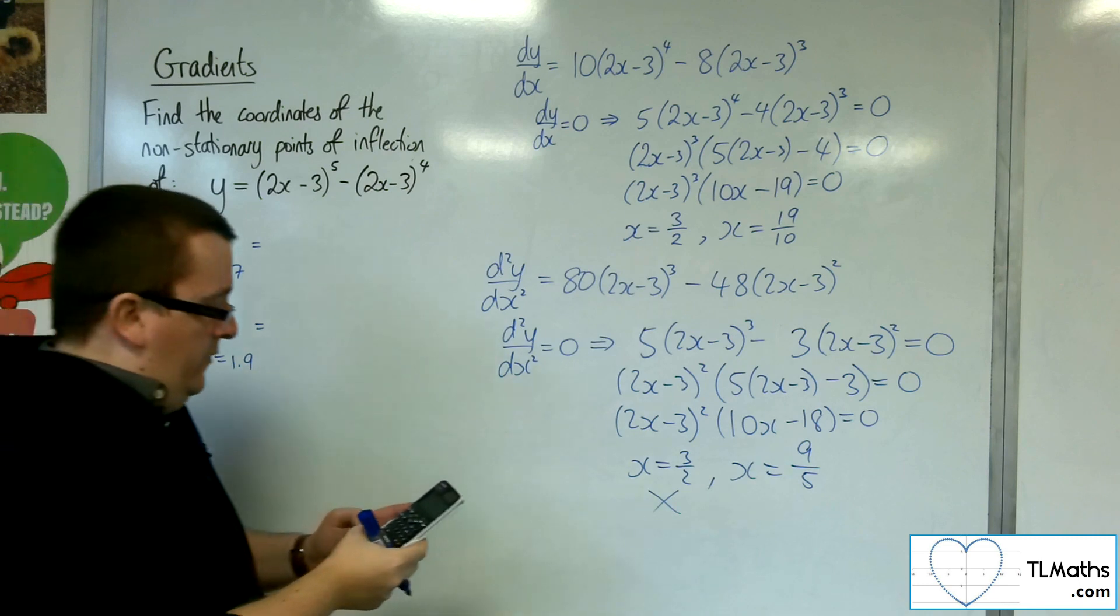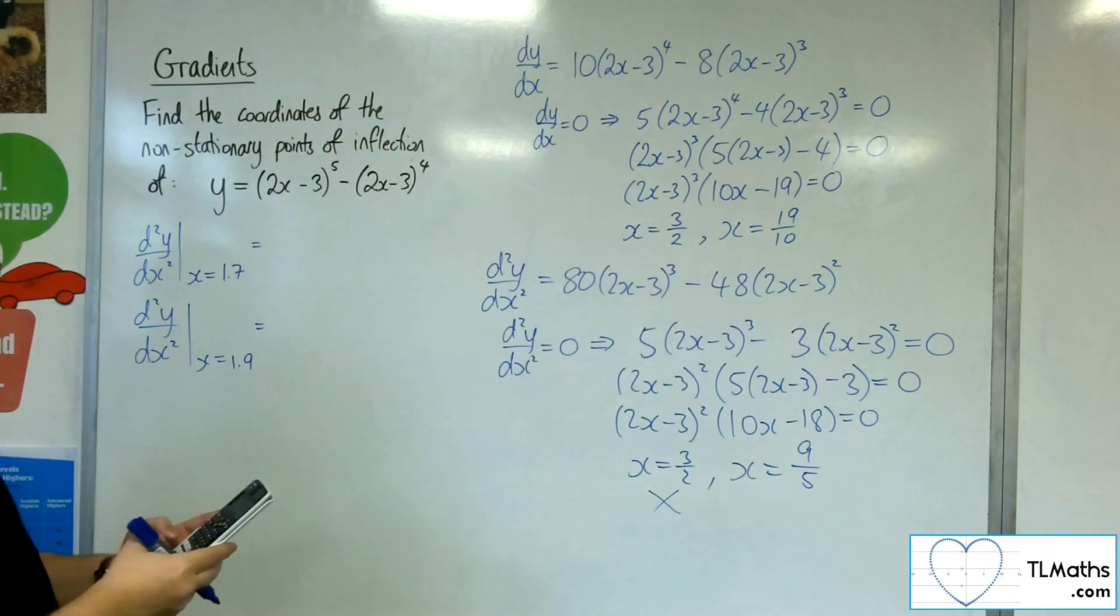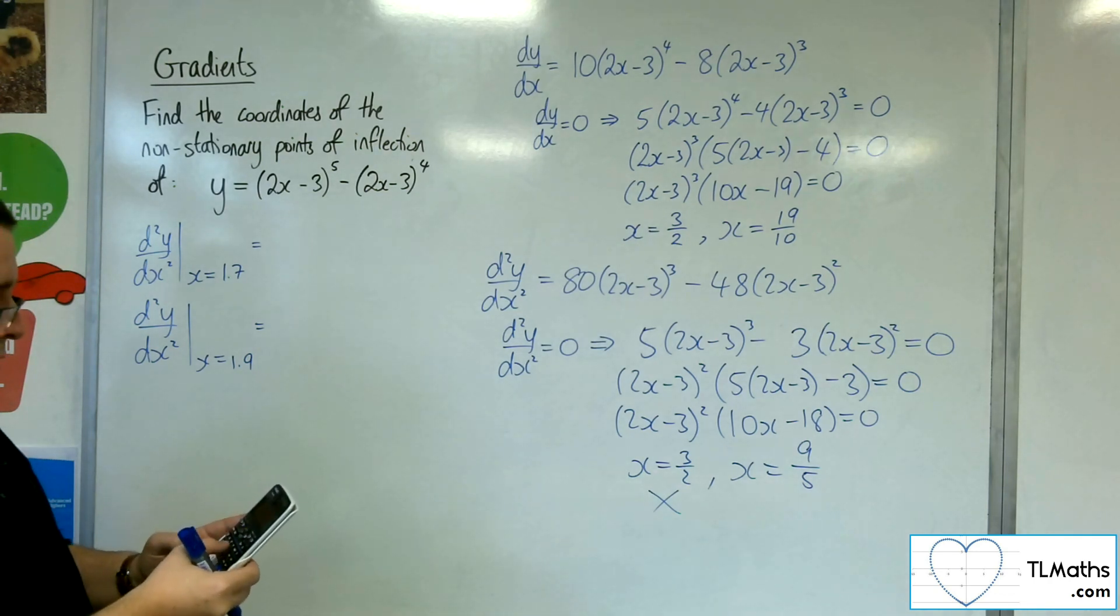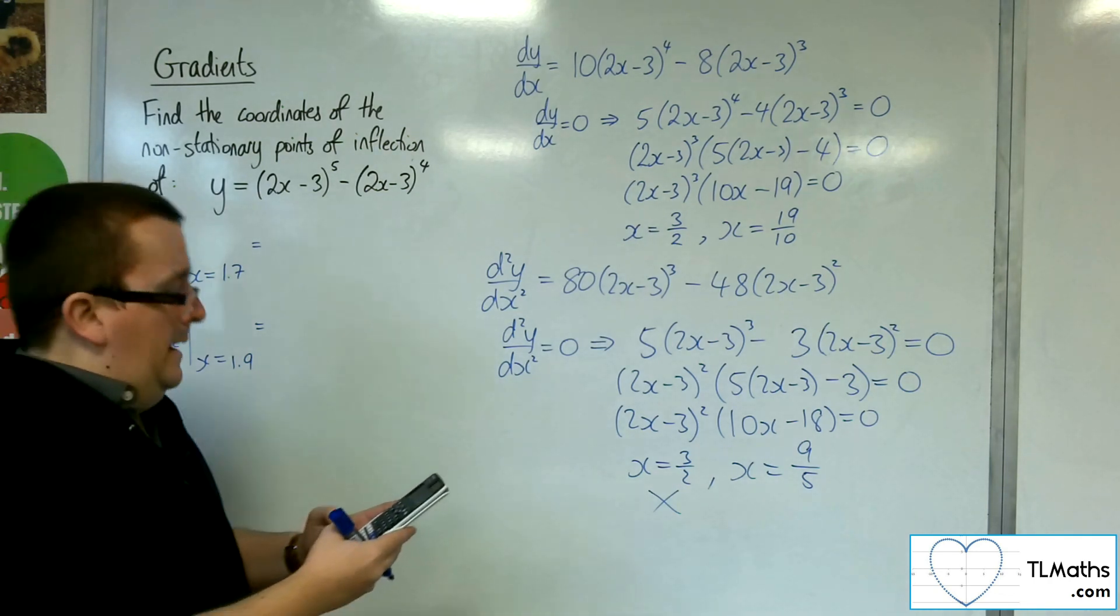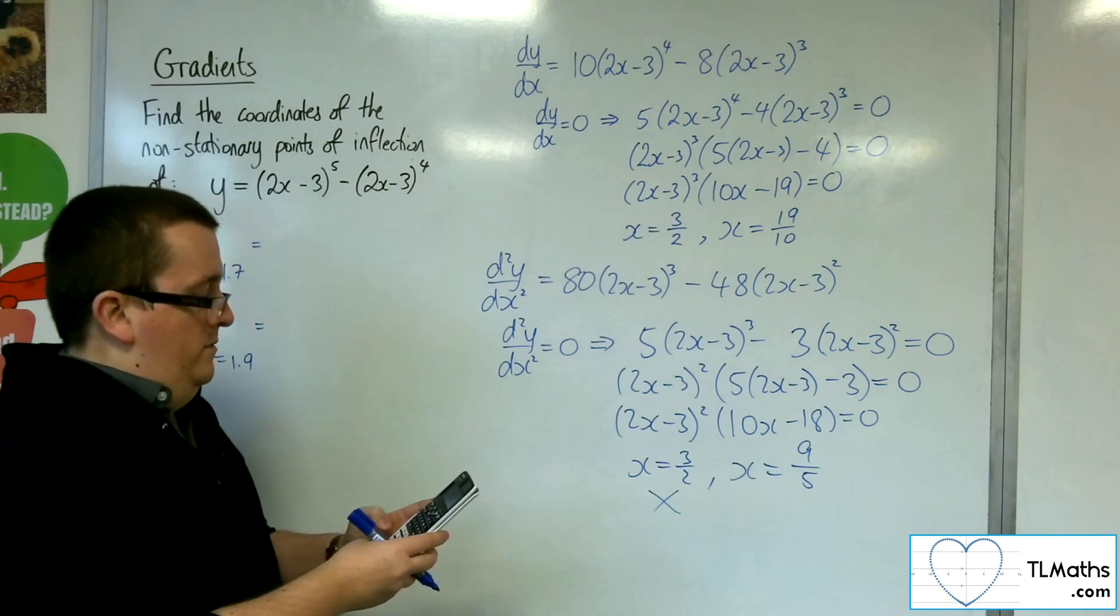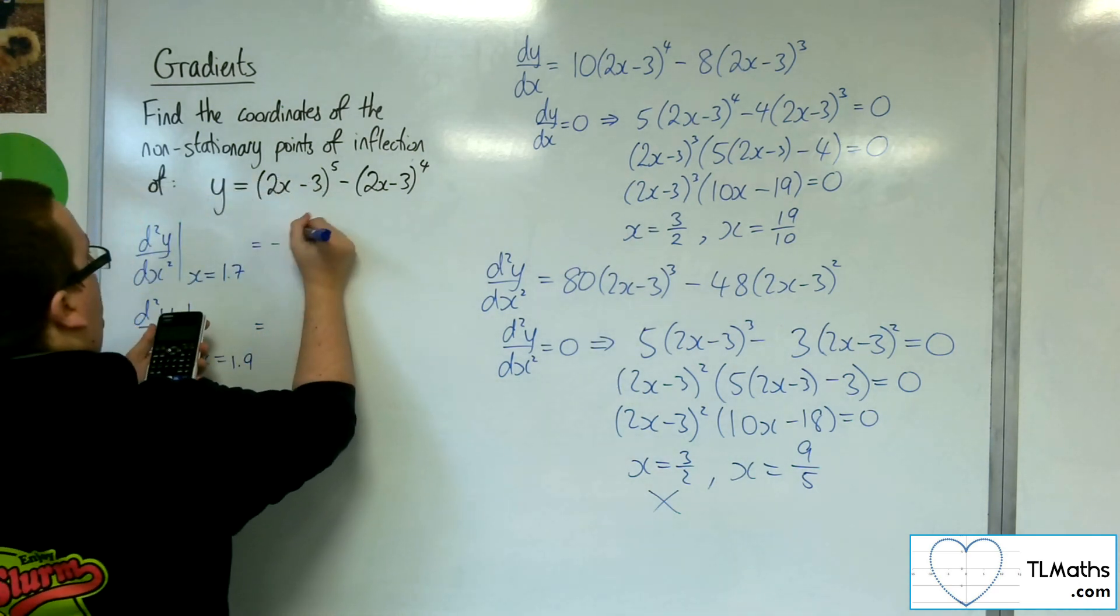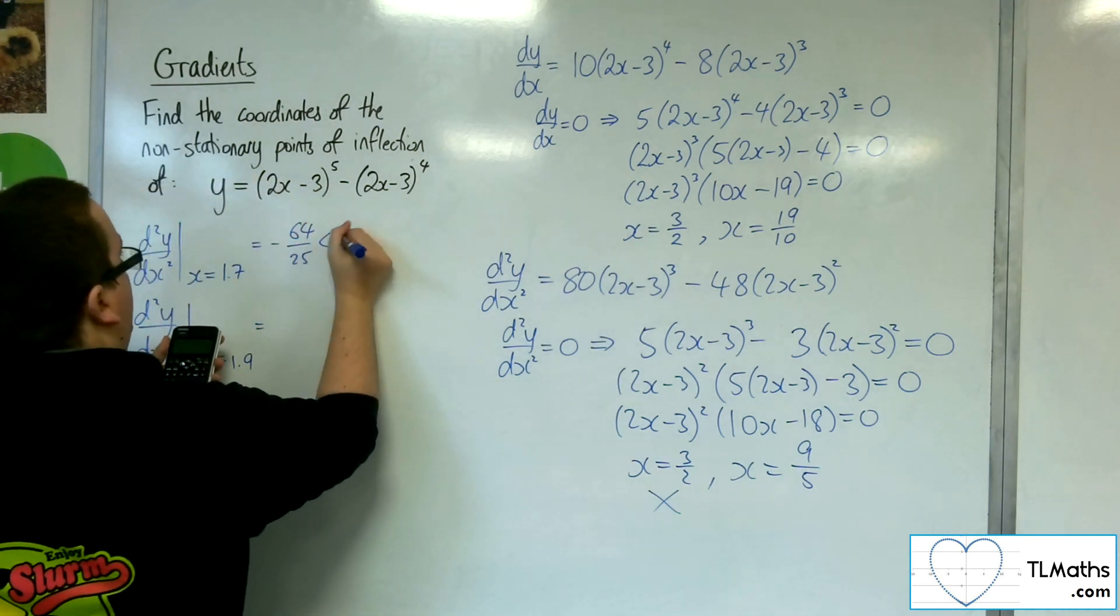So we've got 80 lots of 2 lots of 1.7 takeaway 3 cubed, takeaway 48 lots of 2 lots of 1.7 takeaway 3 squared, and we get minus 64 over 25, so that's negative.